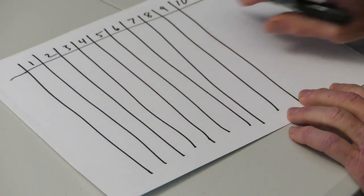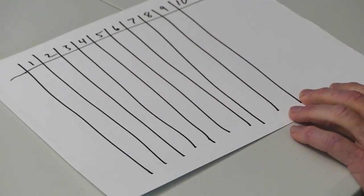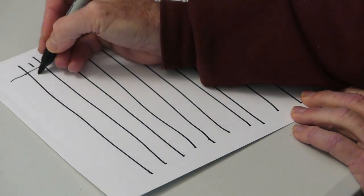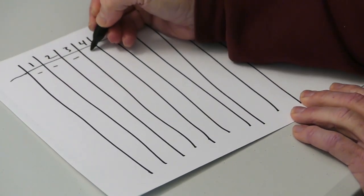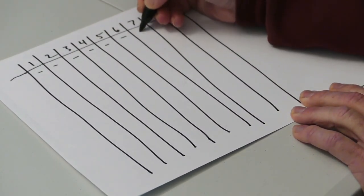Here are the lockers numbered 1 through 10. They all start out as closed. I'll use a minus sign to represent closed and a check mark to represent open.